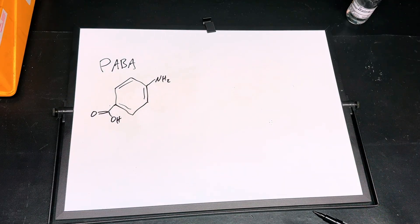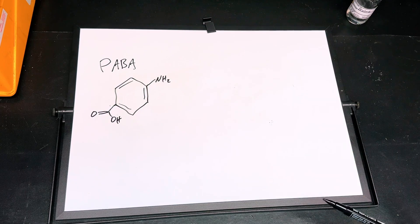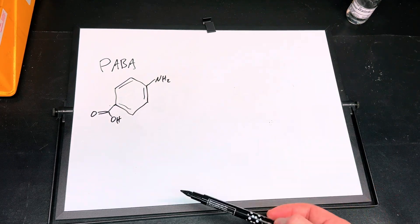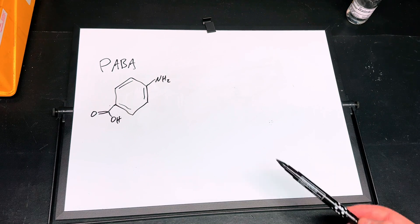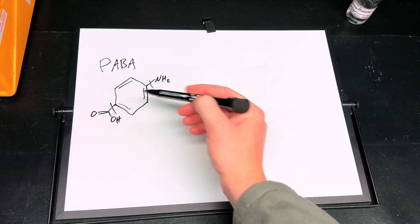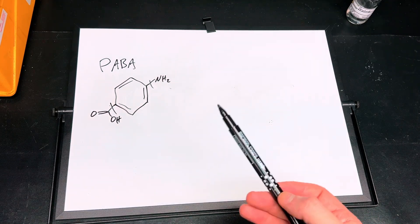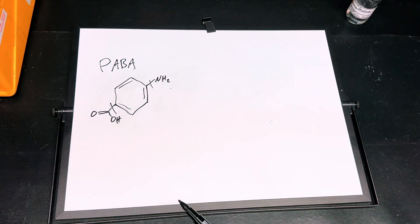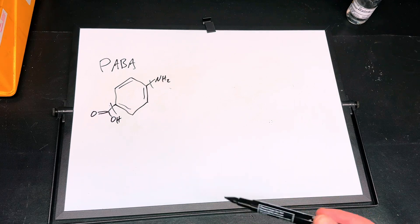This is para-aminobenzoic acid, PABA, or vitamin B10. So non-toxic, it's literally a vitamin. But you can see here that just with a couple small modifications, you get your carcinogenic benzene. So how am I going to actually knock off this amino group and this carboxyl group? I should be able to do it in two steps.